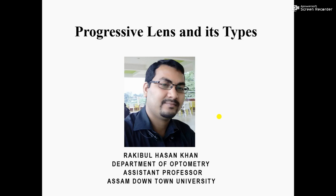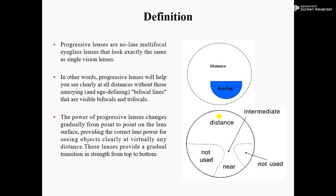Hello everyone, I am Rakibul Hasan Khan. I am going to discuss progressive lenses and their types. Progressive lenses are no-line multifocal eyeglass lenses that look exactly the same as single vision lenses. In bifocal lenses the design is visible from outside, but in progressive lenses the design is not visible from outside.